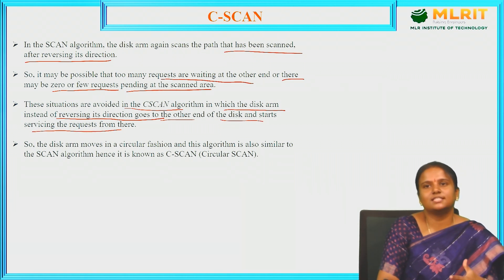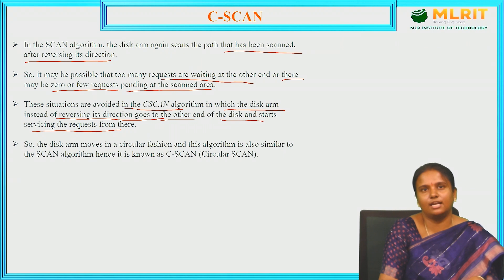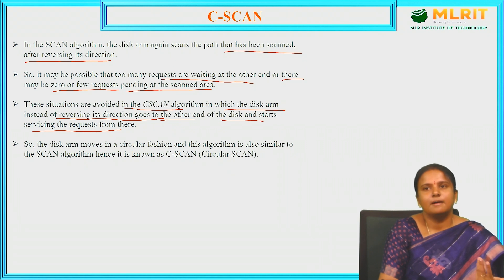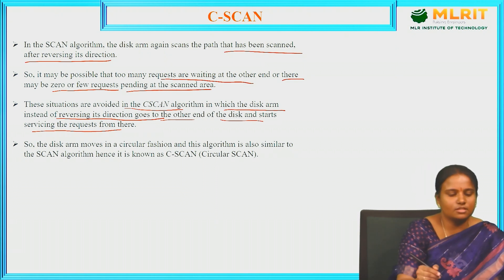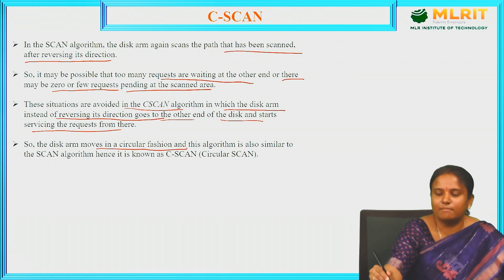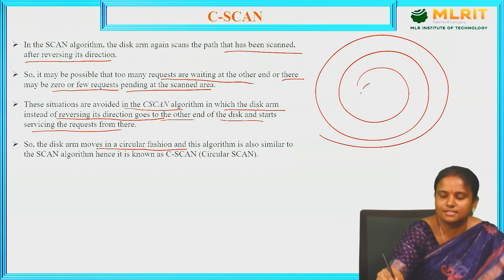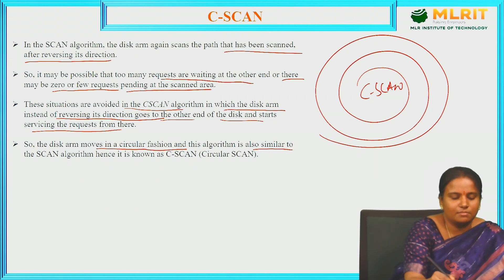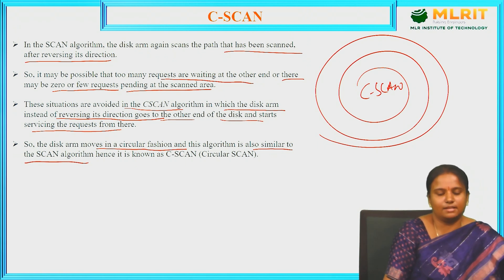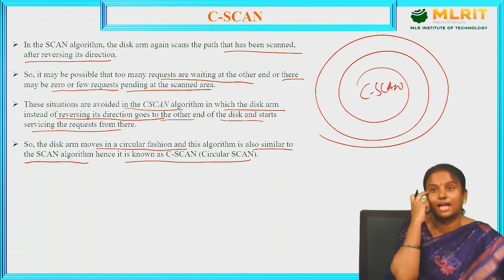In C-SCAN, to avoid rescanning the same path, the disk arm goes to the other end of the disk and starts servicing requesters from there. The disk arm moves in a circular fashion. This algorithm is similar to the SCAN algorithm and hence is called C-SCAN, or Circular SCAN.